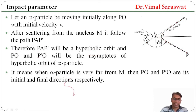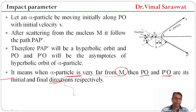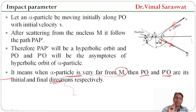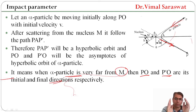When the alpha particle is very far from the nucleus, PO and P dash O are its initial and final directions respectively. In this case, there will be no force of repulsion between the nucleus and the alpha particle.